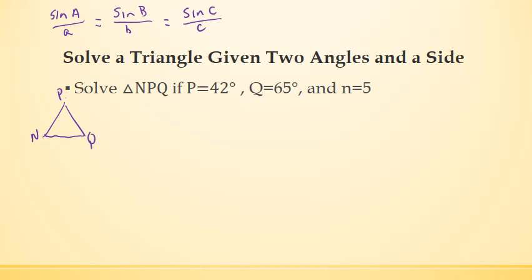And we're trying to find all the angles and all the side lengths, given what information we have here. So P is 42 degrees, and Q is 65 degrees, and we know side length n, which is 5.